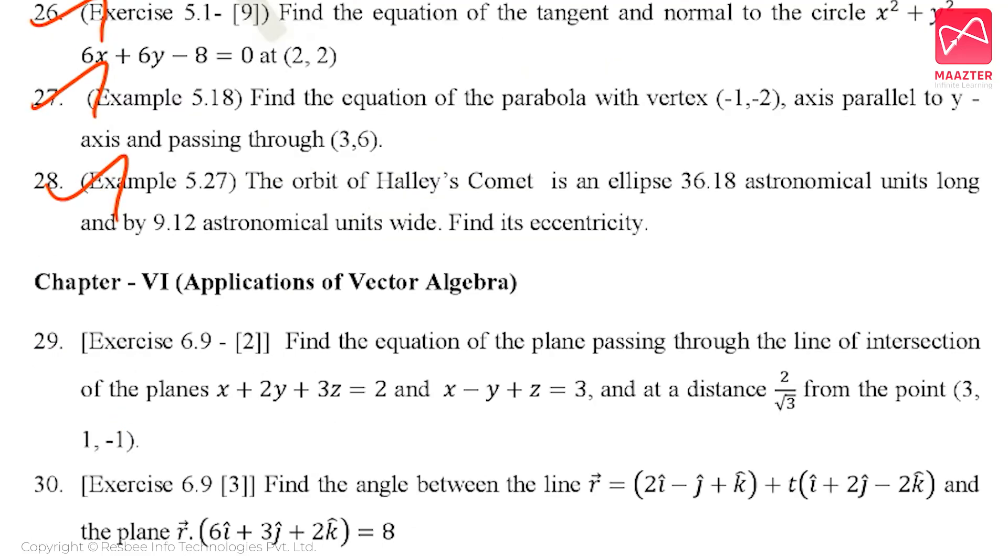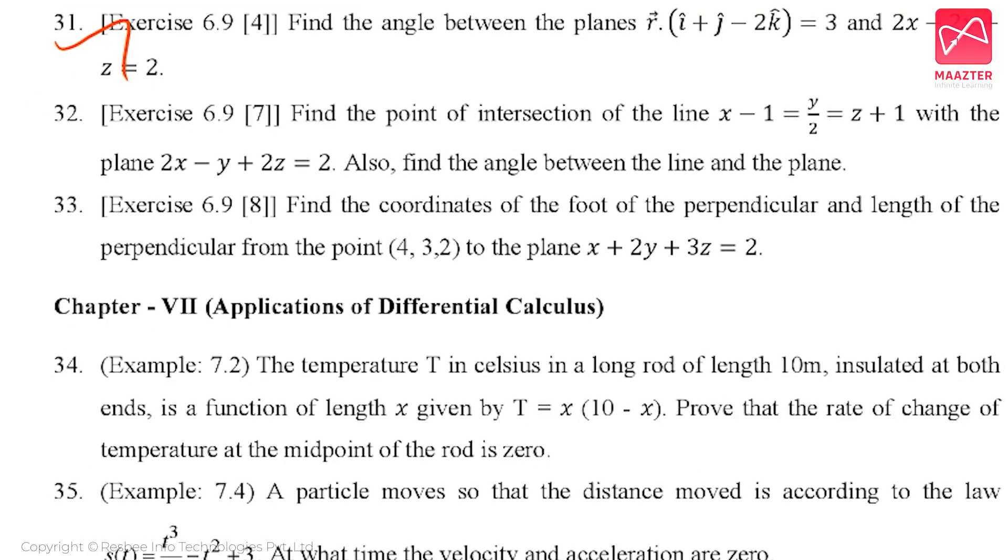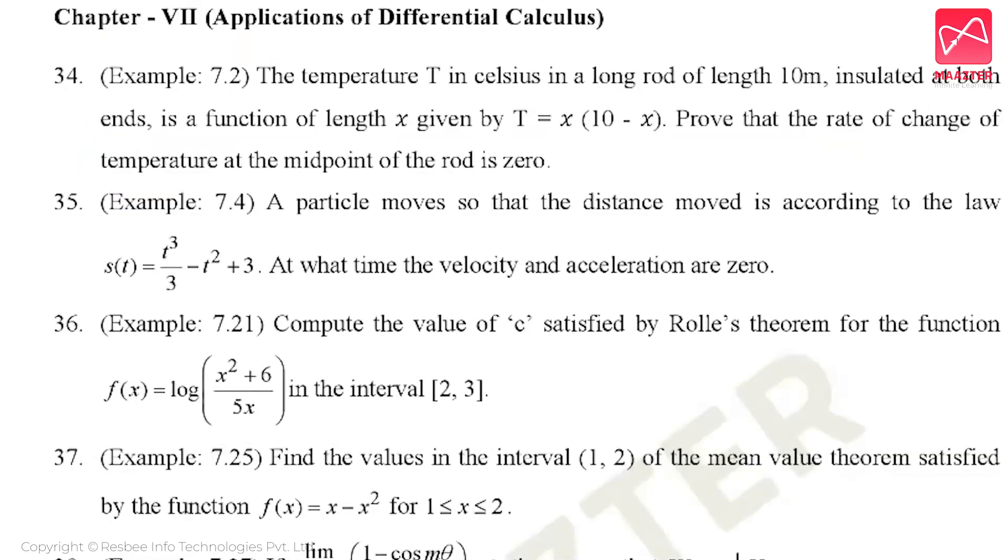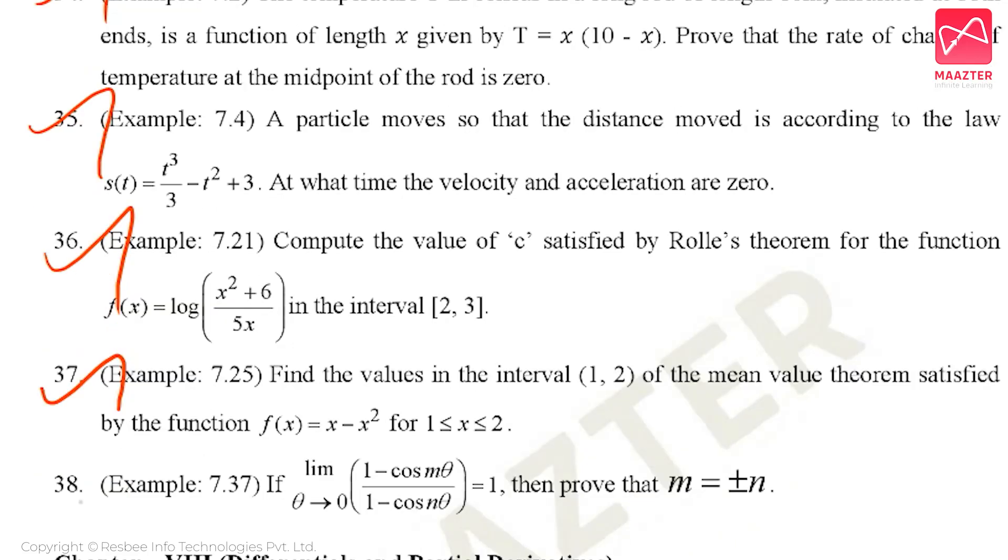Golden questions next Chapter 7, Example 7.2, 7.4, 7.21, 7.25 and 7 points. So Chapter 7 examples, 2 mark questions, concentrate and study well.